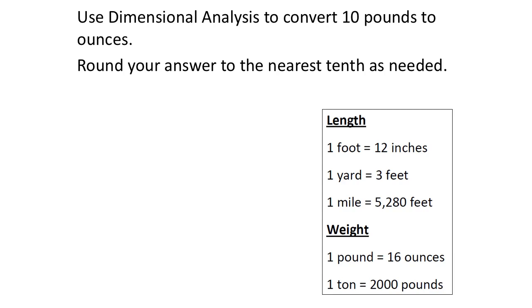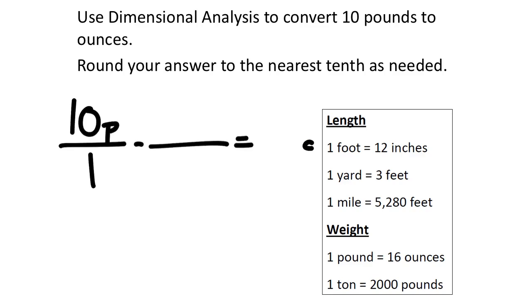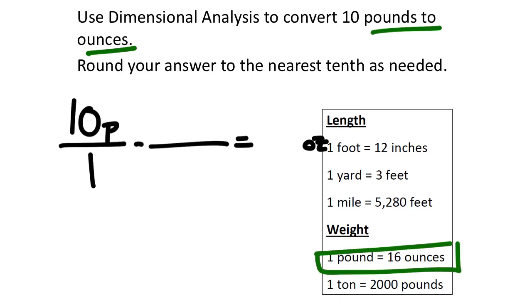Use dimensional analysis to convert 10 pounds to ounces, rounded to the nearest tenth. This one is weight, not length. I'll write 10 pounds over one — I know I need to multiply it by a fraction to get some number of ounces. Looking at the conversion factors, I need a relationship between pounds and ounces. There it is: one pound is 16 ounces. In the dimensional analysis, I need the pounds to cancel out, leaving me with ounces.